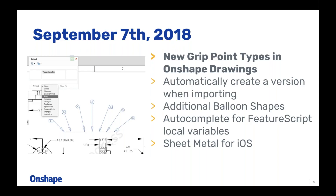The key grip point types to keep in mind: closed circles are where you grab to move, squares are where you grab to resize, hollow circles are for rotation — for example, to rotate a note — and a diamond grip point will flip. This applies to dimensions, annotations, and essentially anything you're dragging in drawings. It's a small but welcome quality of life improvement for those doing a lot of drawings.